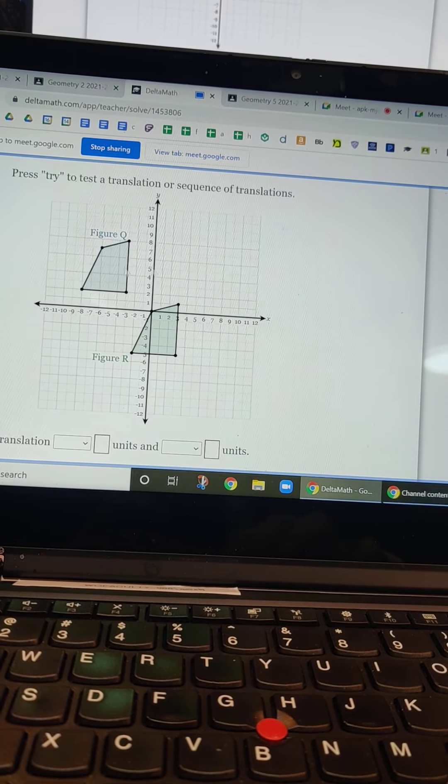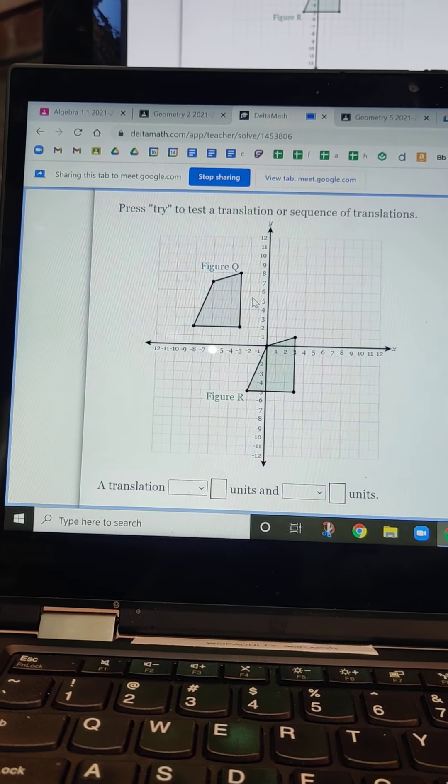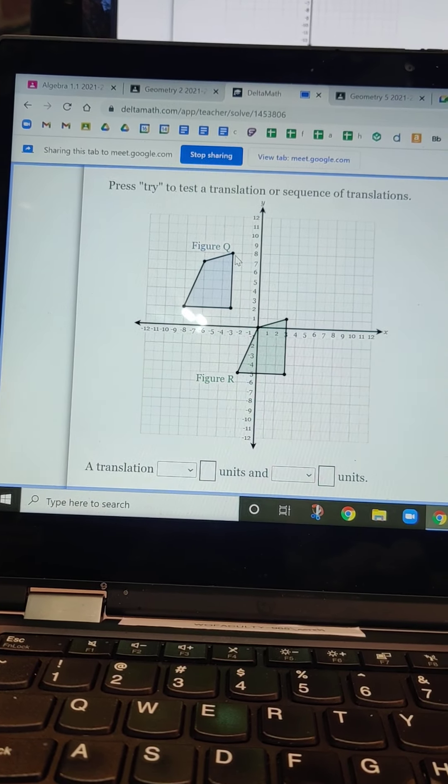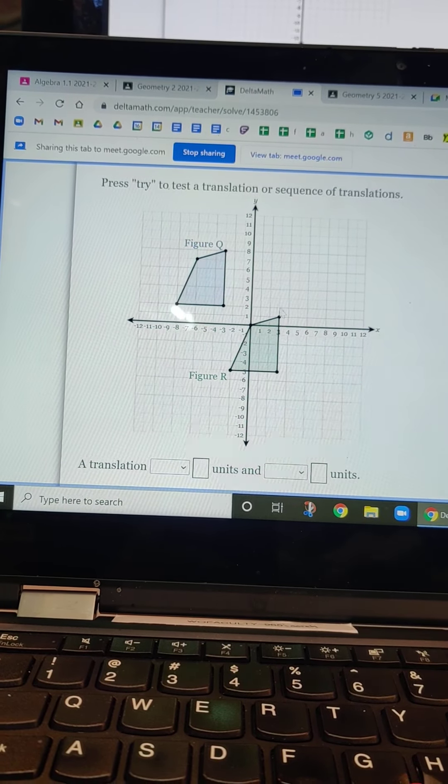So we know that we're going down and right. The question is how much of each? The easiest thing is to pick one point in each figure, the corresponding point, and see how to get from one to the other. So let's say this top right corner going to the top right corner.